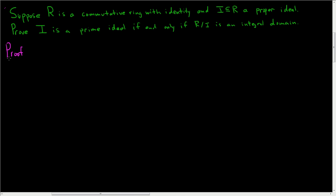Let's start by assuming that the quotient ring is an integral domain. That means if we take any two elements in this ring and we multiply them and we get zero, then at least one of them is zero. That's the definition of integral domain that we'll be using. And the claim here is that I is a prime ideal.